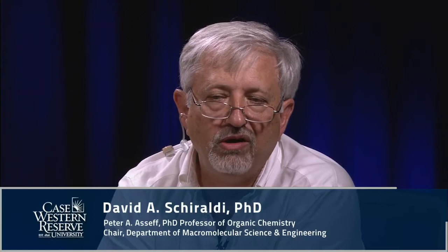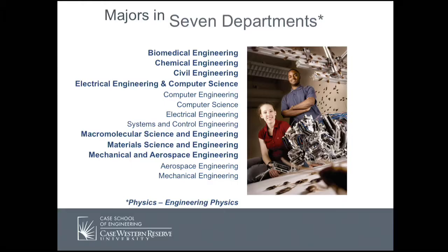One of the keys to the engineering curriculum is what's called the core engineering courses. These six courses are common for all majors — whether you're a chemical engineer, a biomedical engineer, a polymer science and engineering major, or any of the others, you're going to take these same courses. Each of the departments has a website with this information. If you think you're going to be, say, a mechanical engineer, go to the mechanical engineering website and you'll be able to see which order these courses should be taken in.